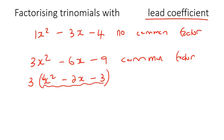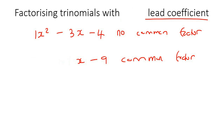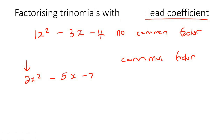It became an easy trinomial again where the number in the front was a 1. You see how the number in the front was always a 1? But now in this lesson, we're going to do questions like 2x squared take away 5x take away 7, where the number in the front is not a 1 and you can't take out a common factor, so you can't get rid of it.